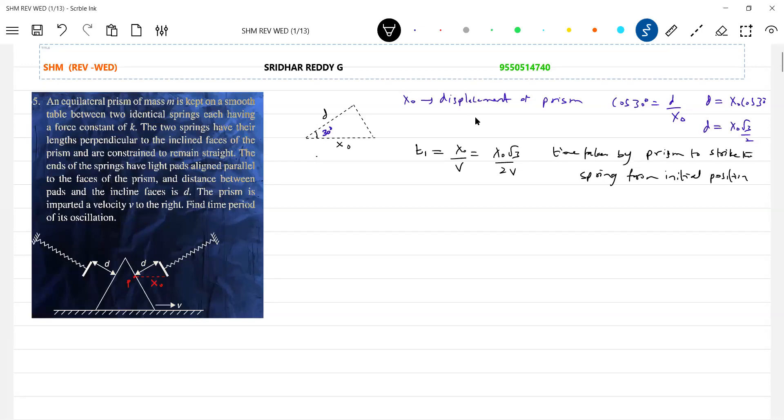X naught by V. X naught will be... I have a mistake correction. The prism has to cover a distance. There's a distance moved by the prism. So when it moves a distance X naught, then when it will go and strike the spring. So now what happened the prism? As it moves out gently, it's going to compress the spring.